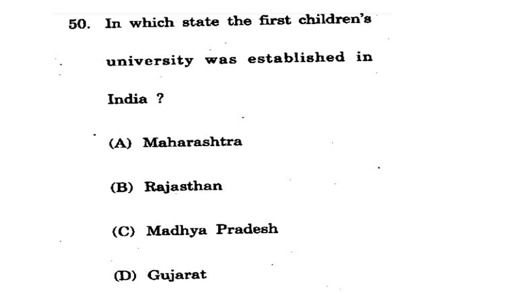Question 50 - last question: In which state was the first student university established in India? Options: Maharashtra, Rajasthan, Madhya Pradesh, Gujarat. The correct option is D - Gujarat. India's first child/student university was established in Gujarat. This concludes today's 50-question paper explanation. In the next session, we will cover the 2017 paper. Thank you for today's session.